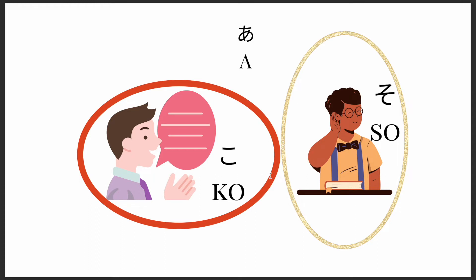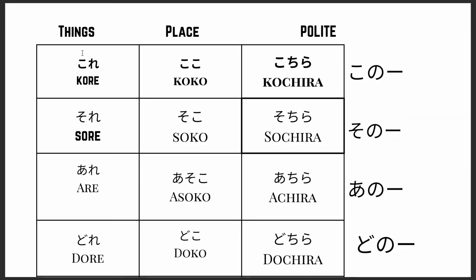First, let's look at when we use each prefix. 'Ko' is used when the person, place, or thing is closer to the speaker. 'So' is used when it's further away from the speaker and closer to the listener. 'A' is used when the person, place, or thing is further away from both of them. Here are the words: if it is a thing, suffix it with 're'; if it's a place, suffix it with 'ko'; and the polite form will use 'chira.' So 'kore' is the thing closer to the speaker, meaning 'this.'